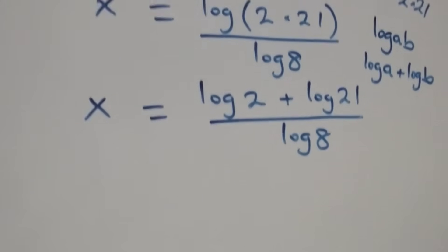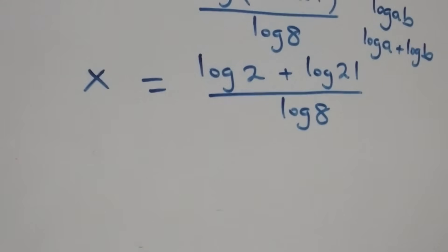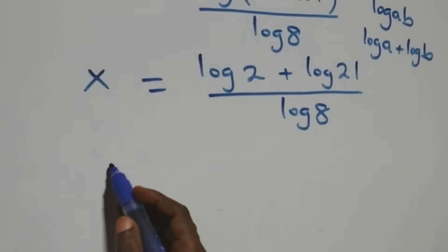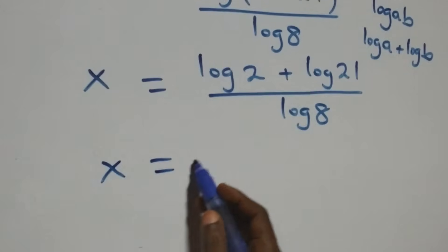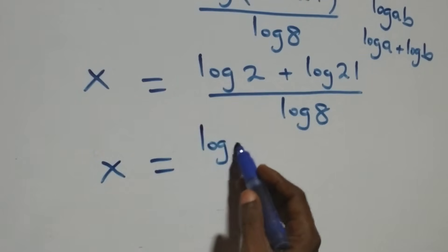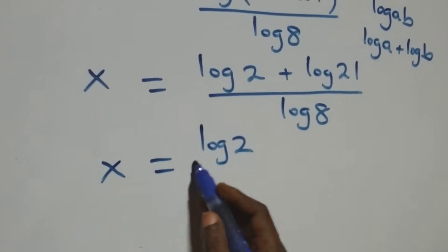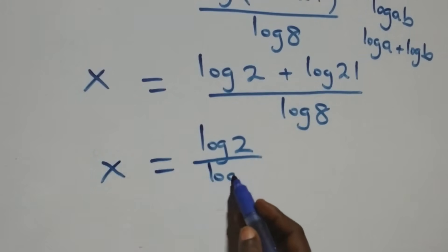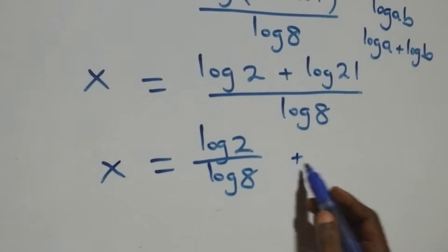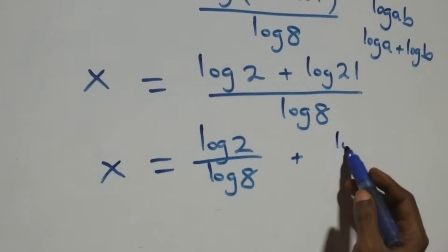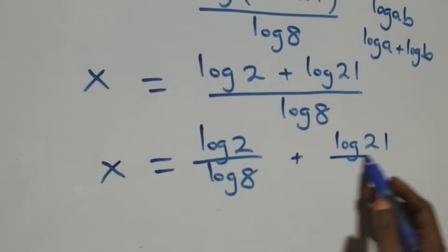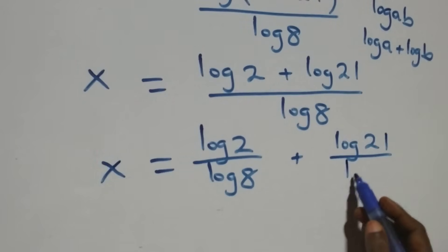From here we separate this into two fractions: x equals log 2 over log 8, plus log 21 over log 8.